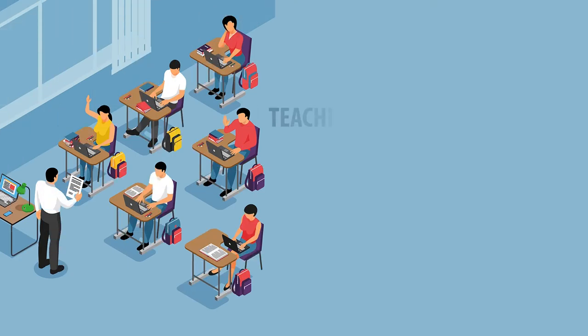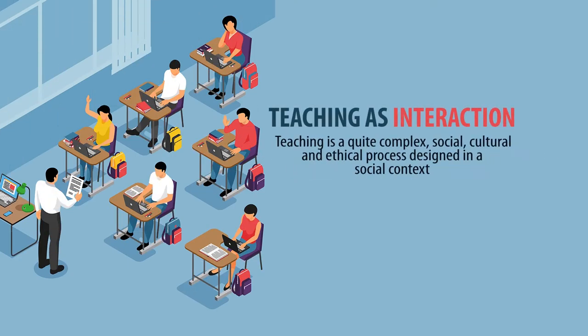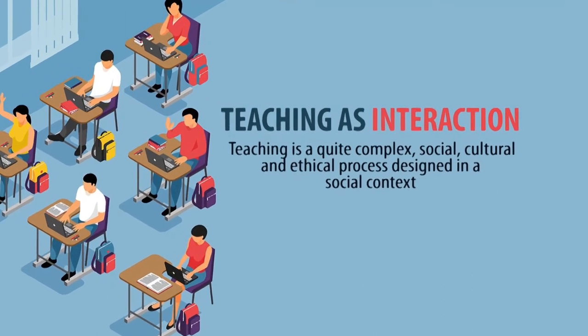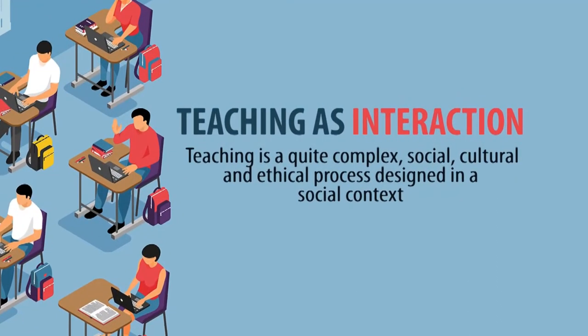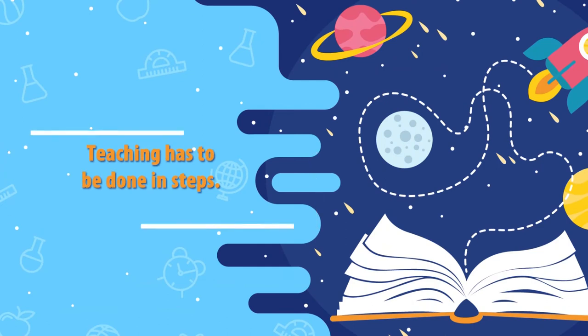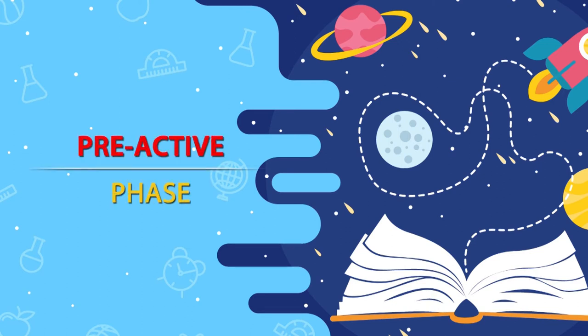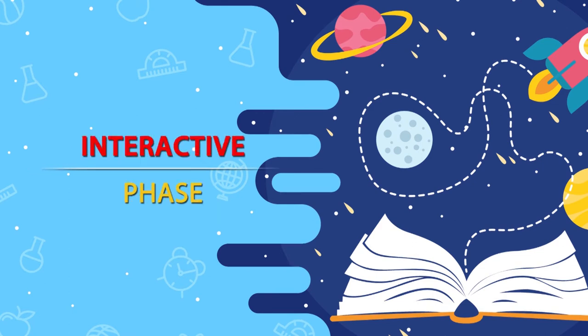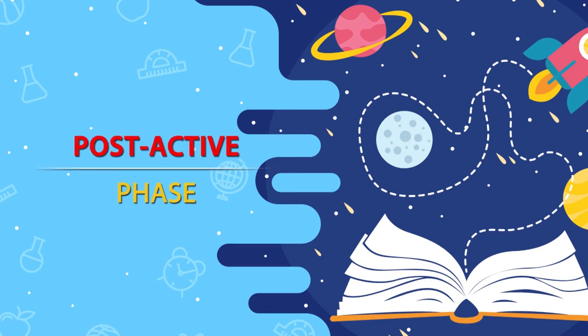Teaching seems to be a quite complex social, cultural and ethical process designed in a social context. It is not simply transmission of content but much more. To make teaching successful and systematic, it has to be done in three phases: the pre-active phase (planning), the interactive phase (execution), and the post-active phase (follow-up).